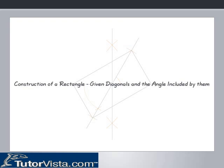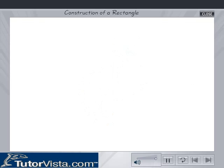Construction of a rectangle given diagonals and the angle included by them. To construct a rectangle ABCD given AC is equal to 7 cm, BD is equal to 7 cm, and the angle included by them is 60 degrees.